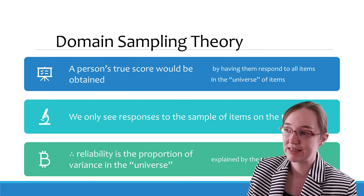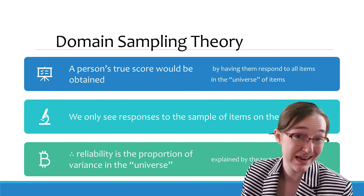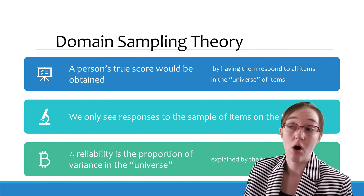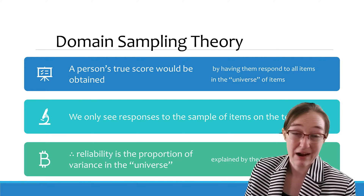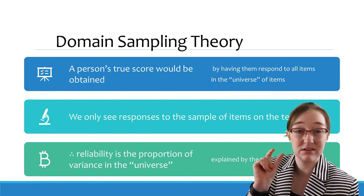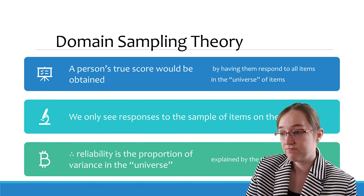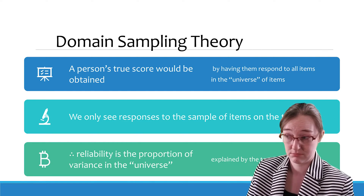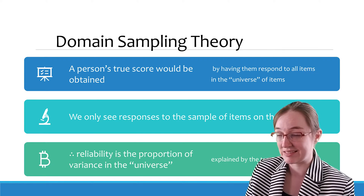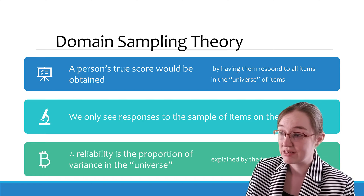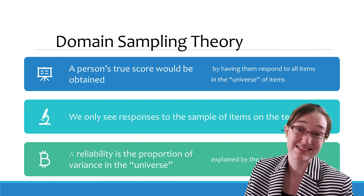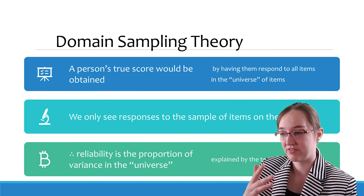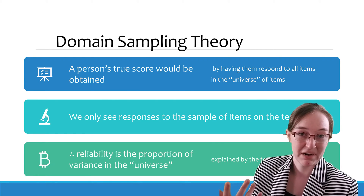Domain sampling theory: the idea here is that a person's true score would be obtainable by having them respond to all the items in the universe of questions — all of them. However, we only see a very small subset of those sample items on a test because it's impossible to test all of them. And so, ideally, here's one way to think about reliability: it is the proportion of variance that is explained in the universe of possible test questions — how much of your variance is explainable by your test.